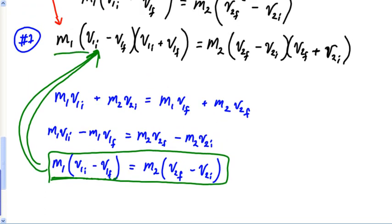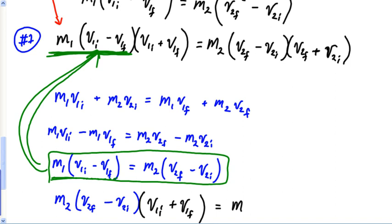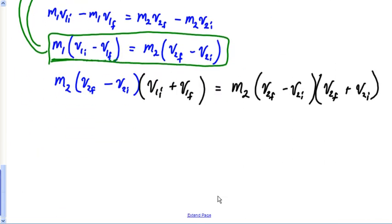But check this out. When I substitute in, this becomes M2 V2 final minus V2 initial times the original equation up there says V1 initial plus V1 final equals M2 V2 final minus V2 initial V2 final plus V2 initial. This is one heck of a problem, isn't it? But now look at something. Look on both sides. I've got M2, look at this.